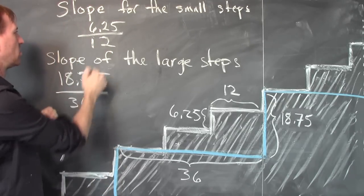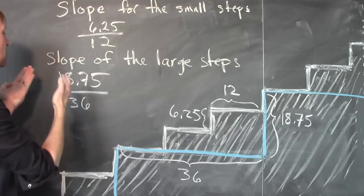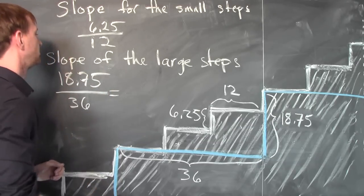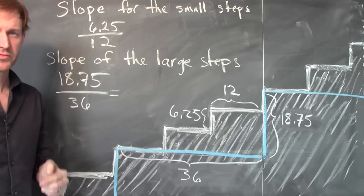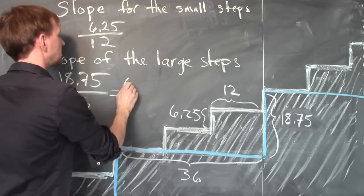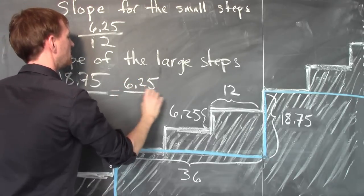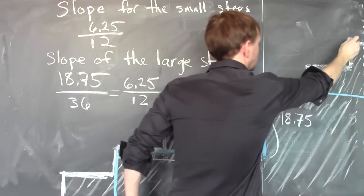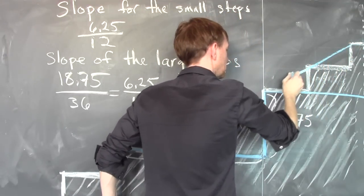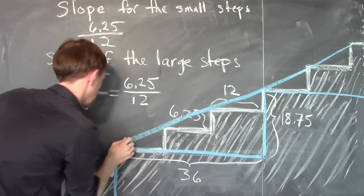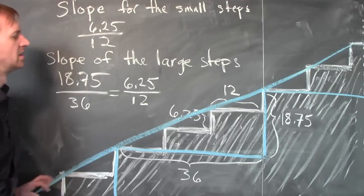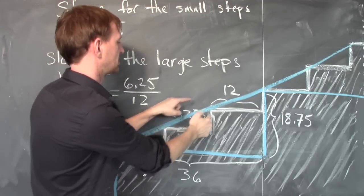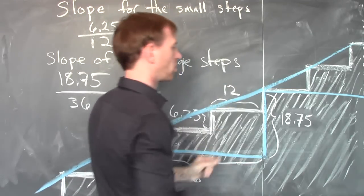These two slopes are the same because we can simplify. We can reduce this fraction by dividing the numerator by 3 and dividing the denominator by 3, we get 6.25 over 12. And we can see if we connect the tips of these stairs with a line, this makes a line of the desired slope. See how the large stairs and the small stairs all meet at the corner with this line.